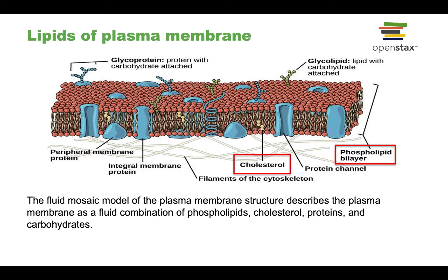Let's go through the different parts of a plasma membrane. There are lipids, and two different types: the phospholipid bilayer, which basically makes the body of the plasma membrane, and then we've got cholesterol. Cholesterol plays a very important function in the plasma membrane in that it regulates the fluidity of the plasma membrane.